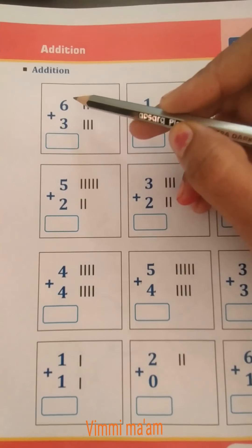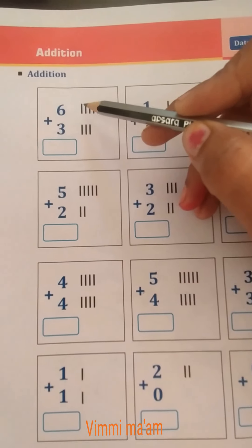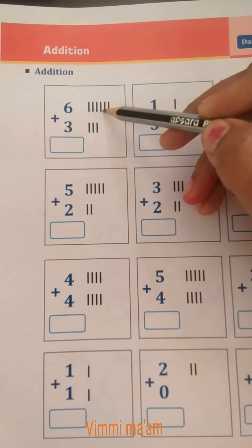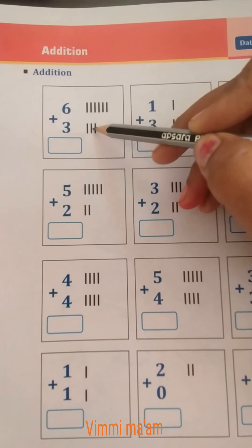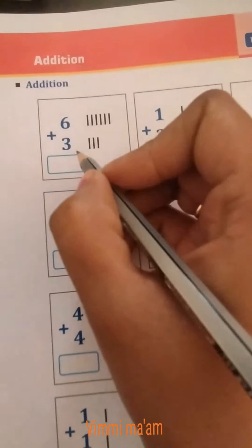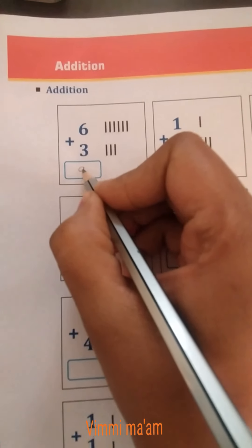Now we count: 1, 2, 3, 4, 5, 6, 7, 8, 9. How many lines? 9. So we write number 9 in this box. Now next.